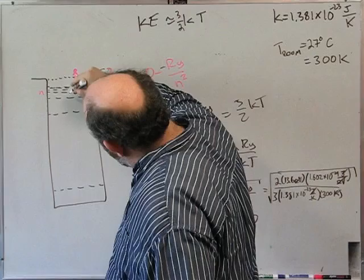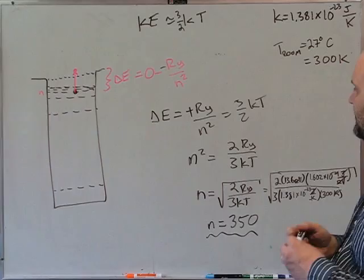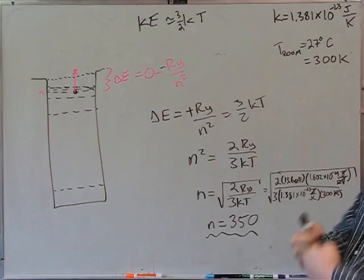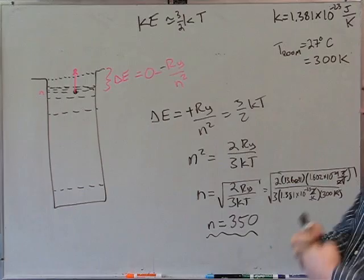So n equals 350 — that's one of those levels barely below the ionization threshold. This is how excited hydrogen would have to be for routine collisions with other air molecules to knock the electrons off. This is why if you release some hydrogen gas into the air, you don't get a plasma — the collisions with air molecules don't have enough energy to ionize it, because most hydrogen is in the ground state, not in the 350th state.